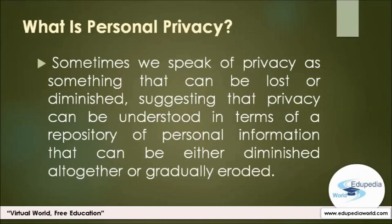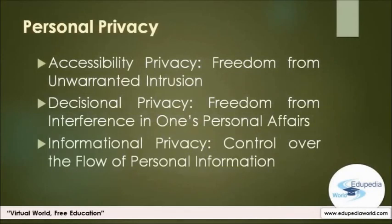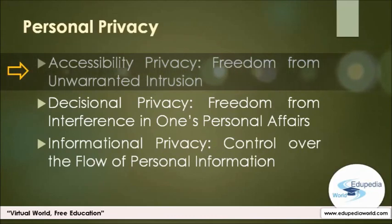Because of these different conceptions of privacy, it is useful to distinguish between the notions of one having privacy and one having a right to privacy. Initially, privacy was understood in terms of freedom from intrusion. Later, it became associated with freedom from interference into one's personal affairs, including one's ability to make decisions freely. Most recently, privacy has come to be closely identified with concerns affecting access to and control of personal information, a view also referred to as informational privacy. Accessibility privacy could be understood as being left alone or being free from intrusion — focusing on the harm that can be caused through physical access to a person or to a person's possessions.